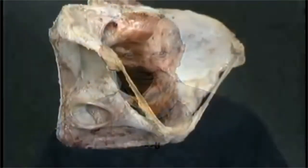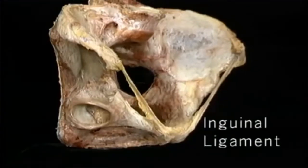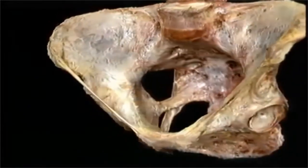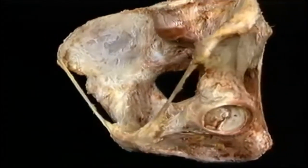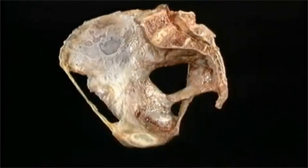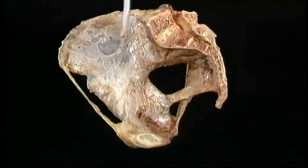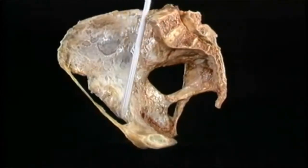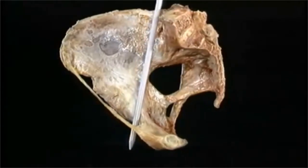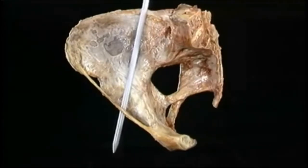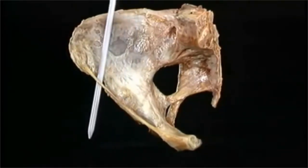Before we look at the muscles, there's one important structure that we need to add to the picture: the inguinal ligament. It's a strong band of tendinous tissue that goes from the anterior superior iliac spine to the pubic tubercle. There's a gap between the inguinal ligament and the underlying bone. Through this gap, some important structures pass from the abdomen to the thigh, including the femoral vein, artery, and nerve medially, and the belly of the psoas and iliacus muscles laterally.